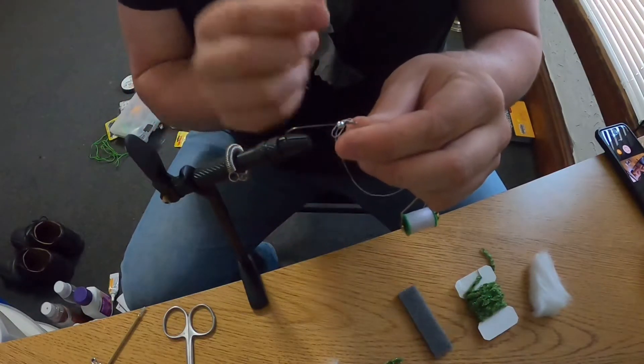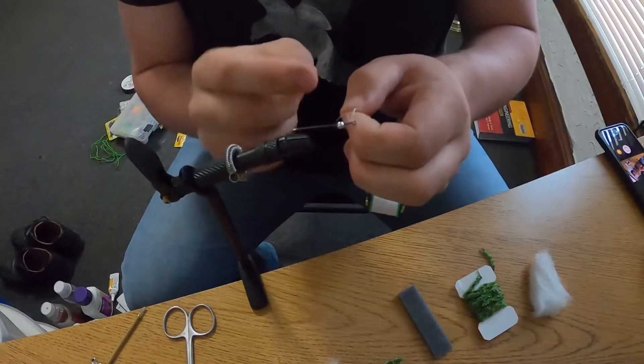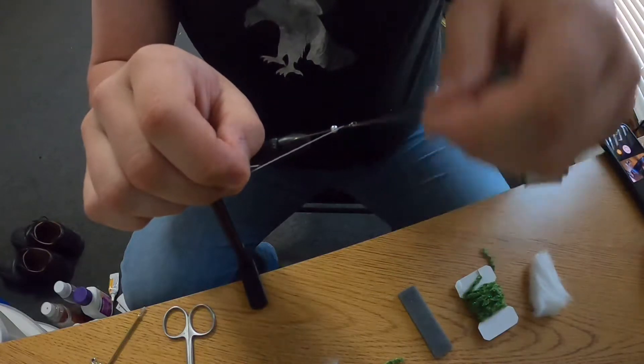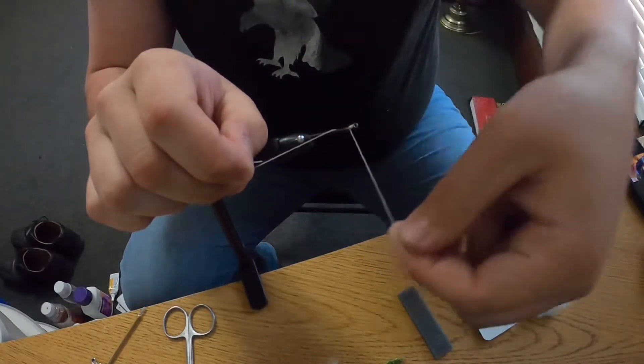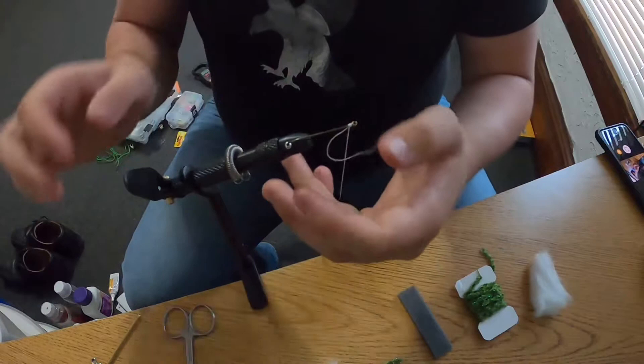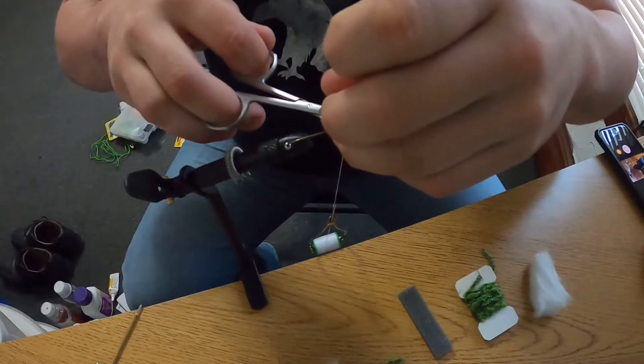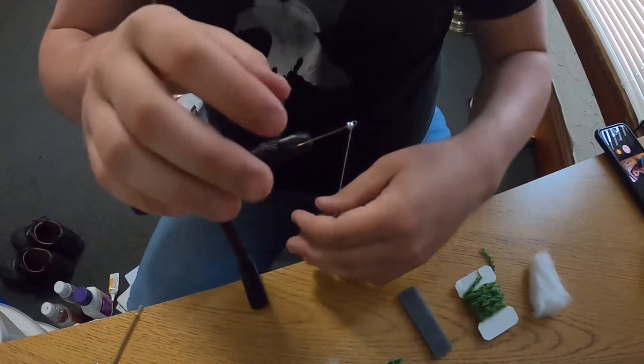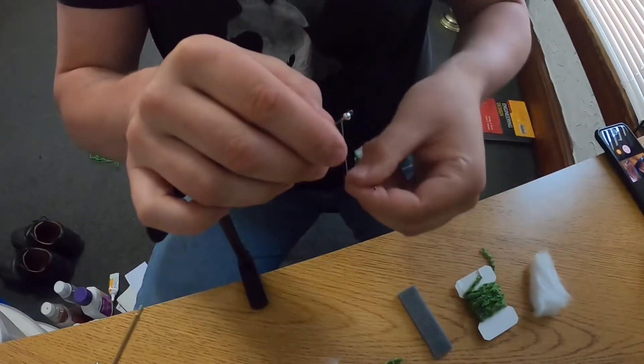After that we'll wrap it on back, trim off the excess of this guy, trim off the tag end. Push the bead forward to try and cover that a little bit, and then wrap right behind that bead.